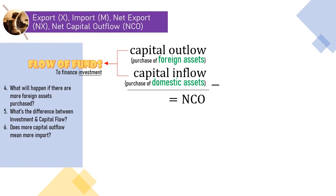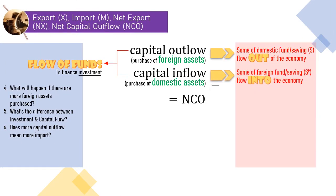To easily remember outflows and inflow of capital, the keywords are of course, out and into. When the funds are flowing out of the economy, we have capital outflow. On the contrary, when the funds are flowing in, we have capital inflow. So if there are more foreign assets purchased, as asked in question 4, we are going to get the assets and in return, we flow funds out of the economy — it is a capital outflow. The increase will add to the net capital outflow.